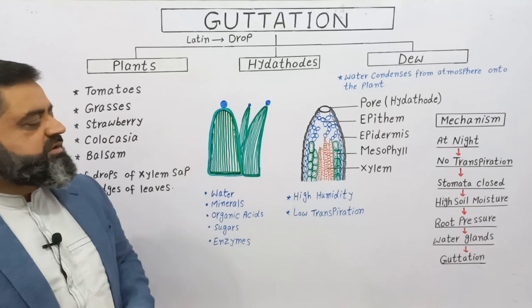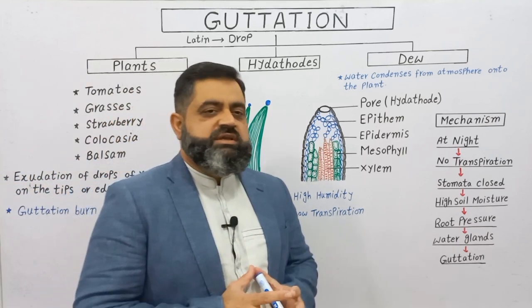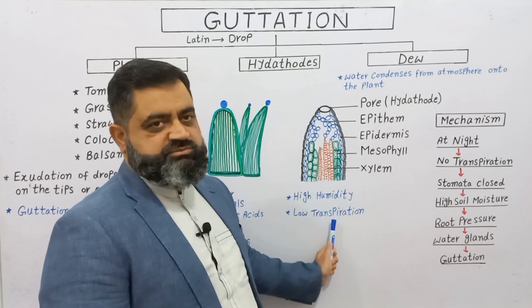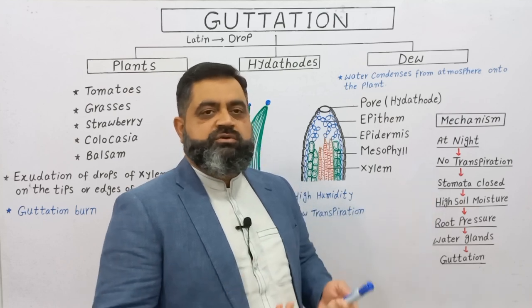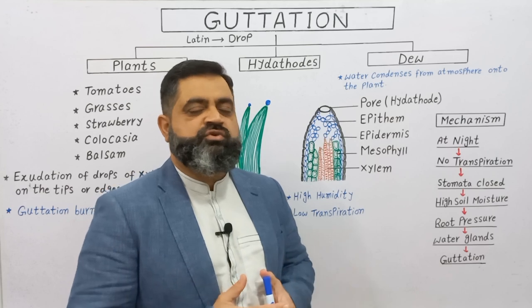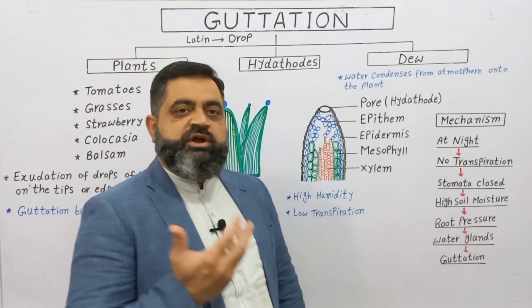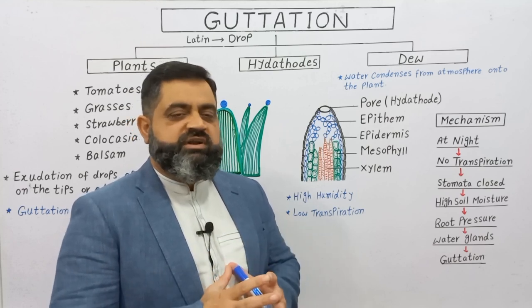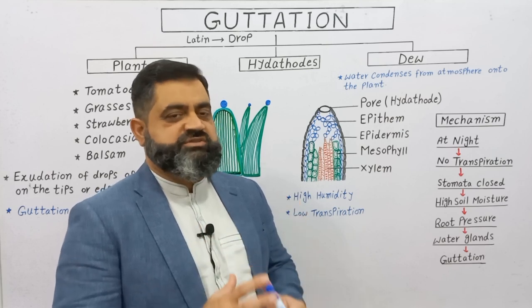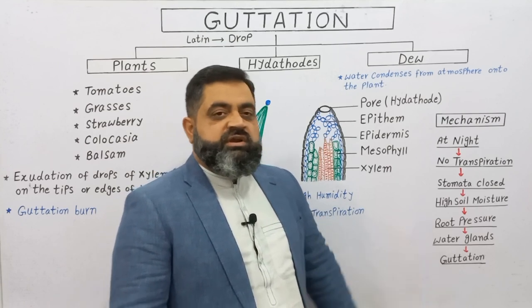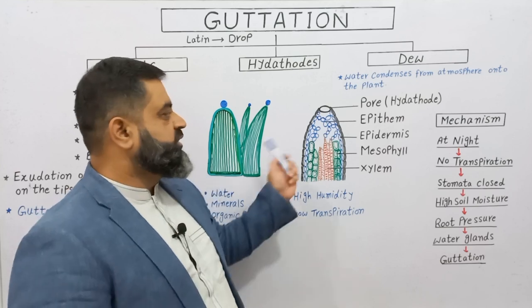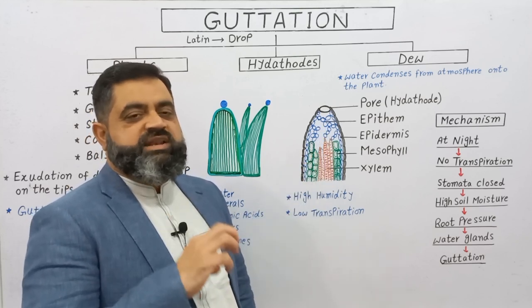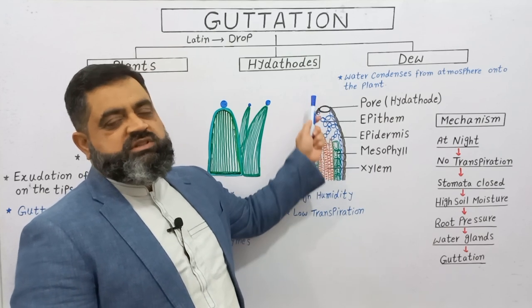To summarize the whole process: guttation usually takes place at night when there is high humidity and low transpiration. Stomata are closed at night because there is no photosynthesis taking place. Due to high soil moisture, a large amount of water enters from the soil into the roots, generating a significant root pressure. This root pressure moves from the roots into the stems and leaves, reaching the water glands, and pushes the xylem sap out of these tiny hydathode pores into the atmosphere as water droplets — this is guttation.